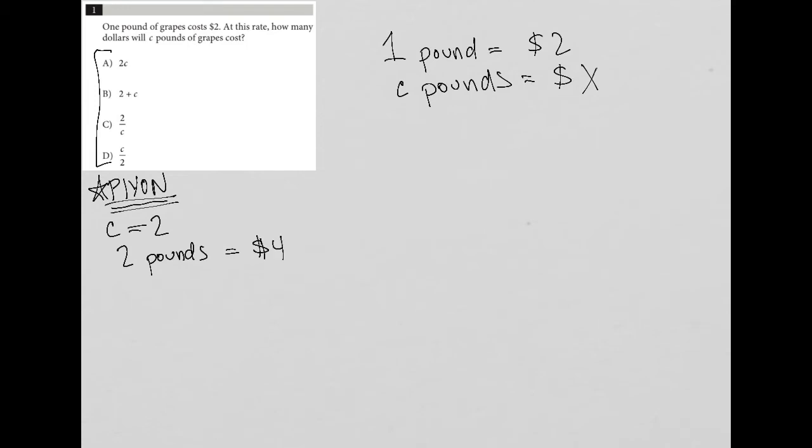Right. So I answer the question kind of outside the realm of even looking at the answer choices for right now. And then my next step is to see, well, which one of the answer choices matches the answer that I just got? So I replace the variable with the number that I'm plugging in. Right. In this case, being two.